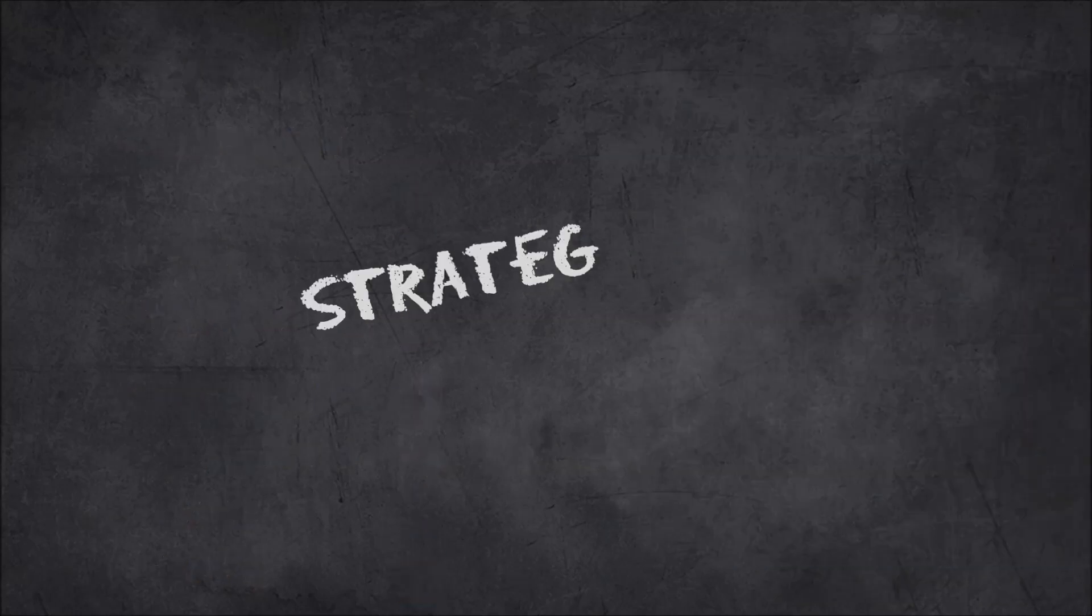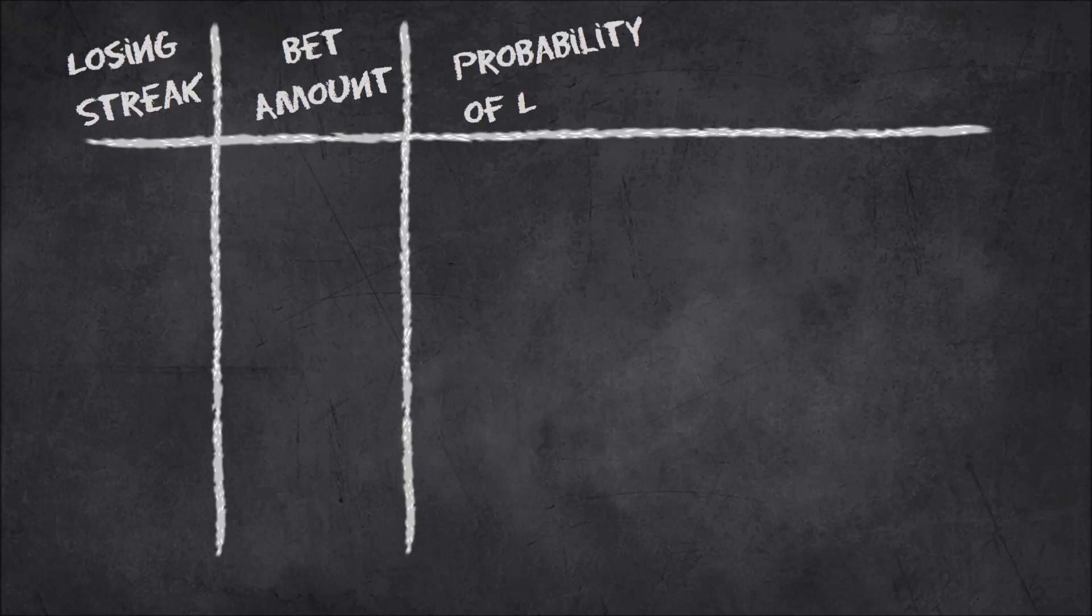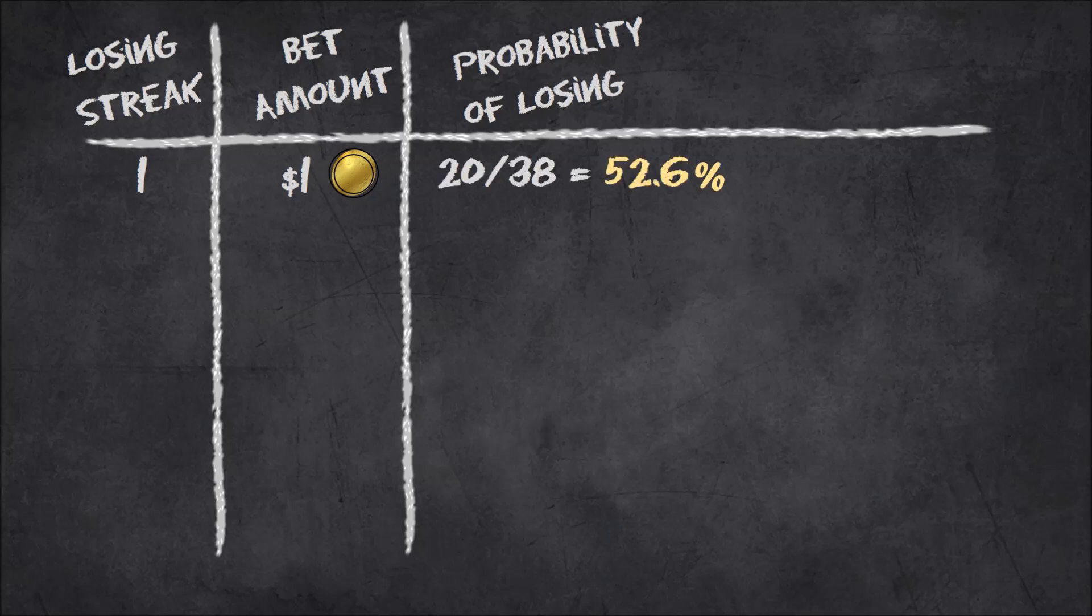So there are a lot of different strategies out there. Let's take a look at a really simple one that only involves betting black or red. So how this works is we start by betting $1. The probability of us losing is 20 out of 38, a little bit more than 50%. Now, if we win, great, we keep it in a little pile and bet another dollar the next time.